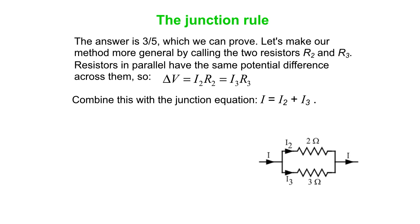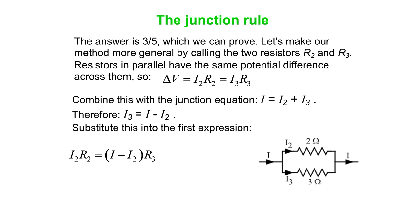Then we've got our junction equation. I is I2 plus I3. So, we can solve that for I3 and then put that expression in for I3 in the delta V equation. So that gets us I2R2 is I3R3, but I3 is I minus I2. So, it's I2R2 is I minus I2 times R3. We've eliminated I3 from that equation, which allows us to solve for I2.